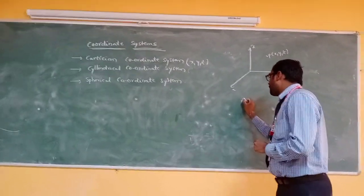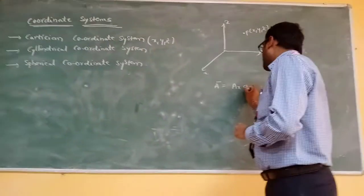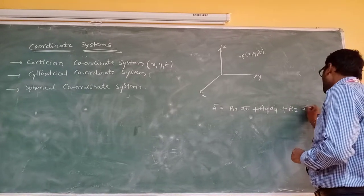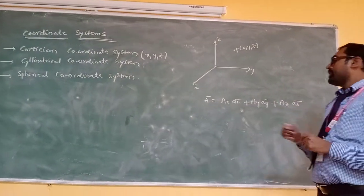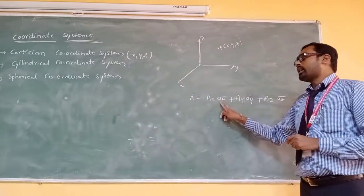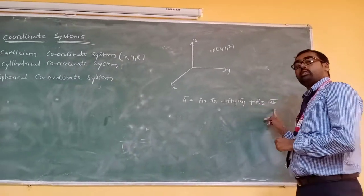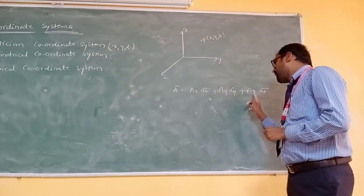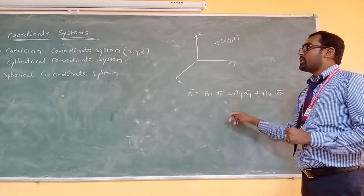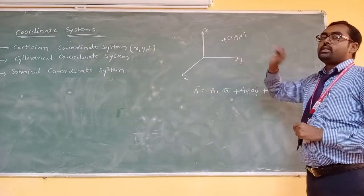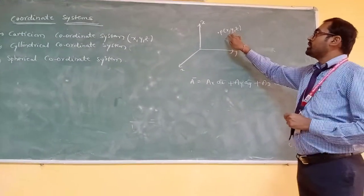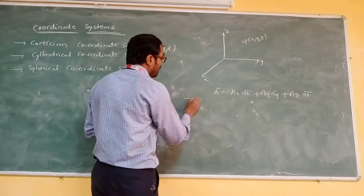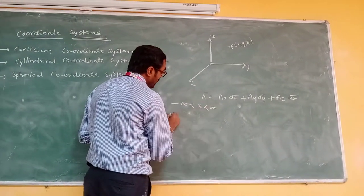In the Cartesian coordinate system, the vector form A-bar is equal to AX times AX-bar plus AY times AY-bar plus AZ times AZ-bar. Here, AX means the unit vector in the X direction, AY is the unit vector in the Y direction, and AZ is the unit vector in the Z direction, with magnitudes AX, AY, and AZ respectively. The coordinates are X, Y, Z.